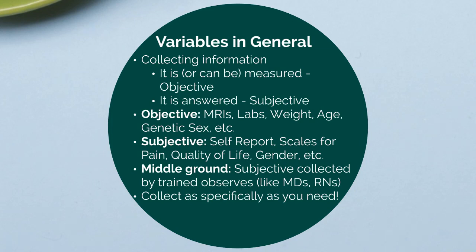Objective variables are often thought of as clinical variables — things like MRIs, lab measures, weight, age, and genetic sex. Subjective measures are things that are self-reported: scales for pain, quality of life, gender, gender identity, sexual preference. Those are subjective variables.